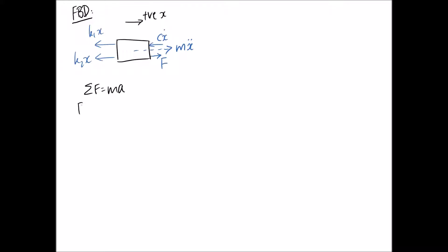So what we should be able to do now is sum our forces to be equal to the mass times the acceleration, remembering that this is the positive x direction. So we're going to have positive F minus cx dot minus k1x and minus k2x, and it's going to equal mx double dot.